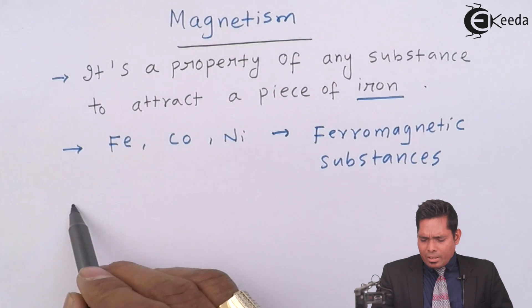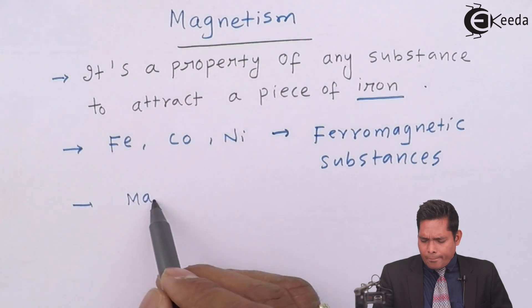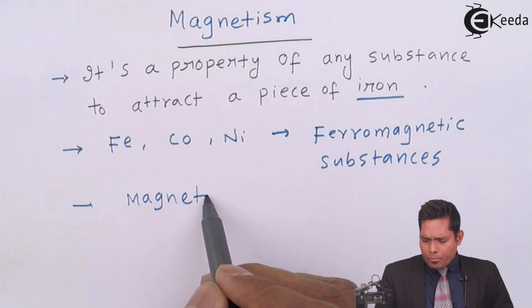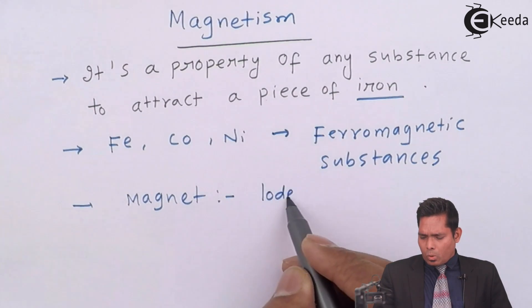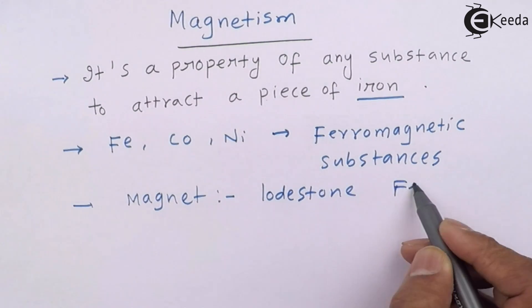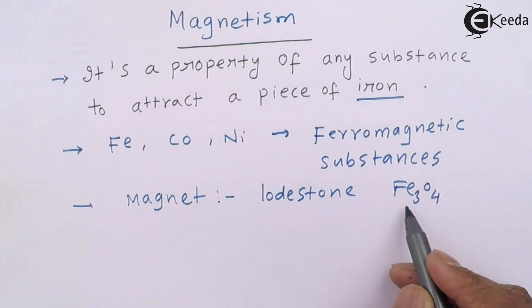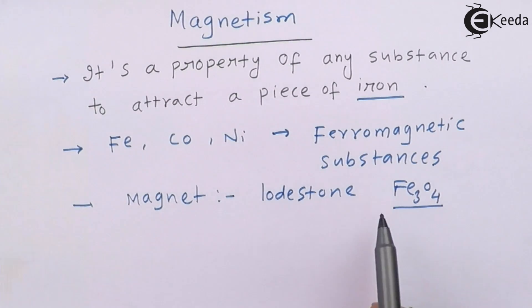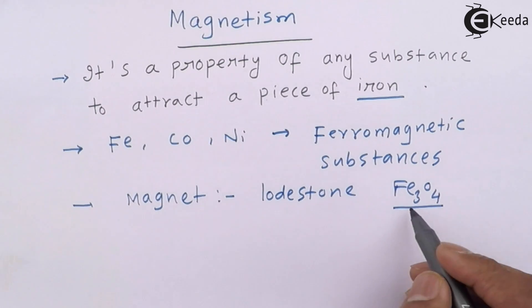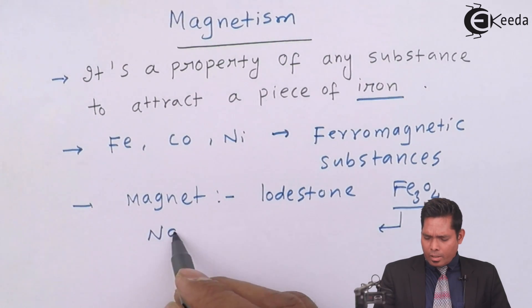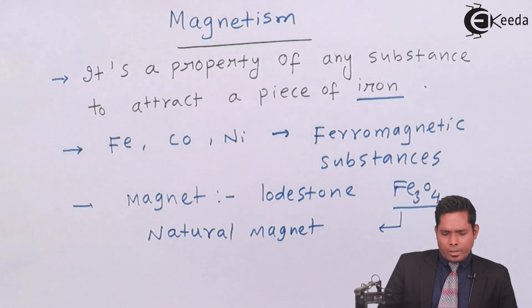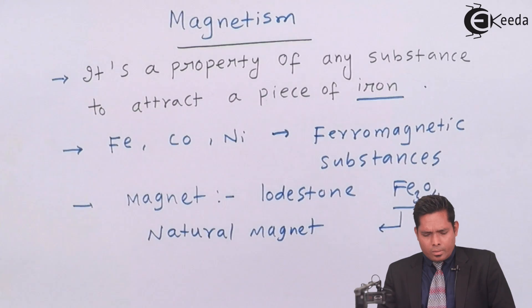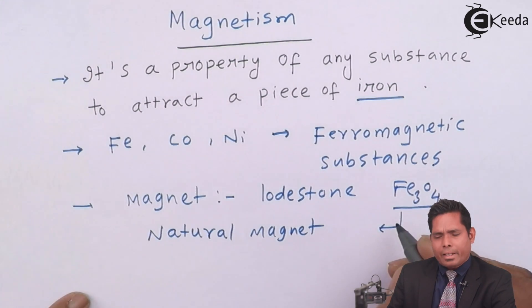And what is a magnet? Another name, it is called lodestone. Lodestone or Fe3O4, magnetite, ore of iron, that is a natural occurring magnet. This is a natural magnet. It is a natural magnet that is known as magnetite.